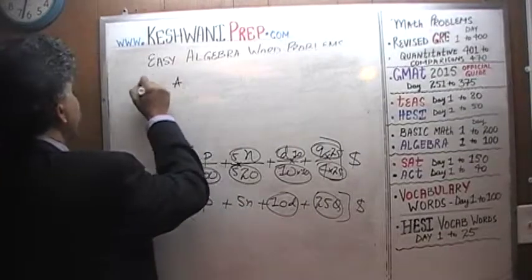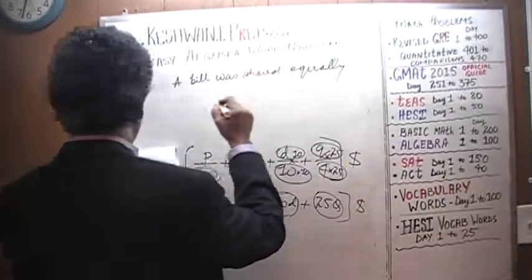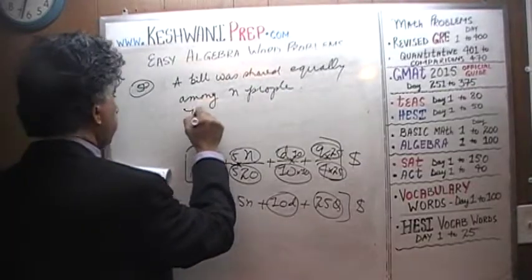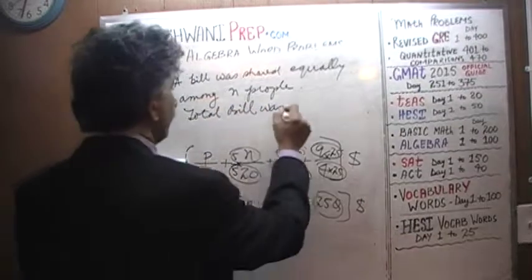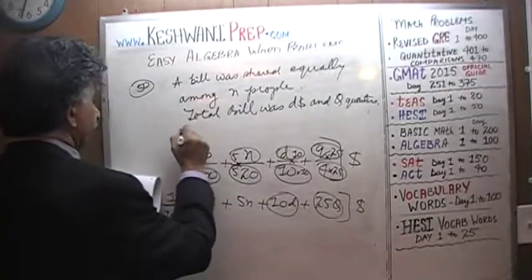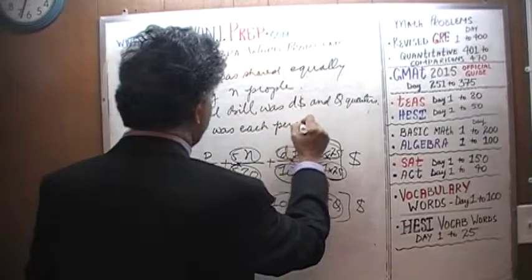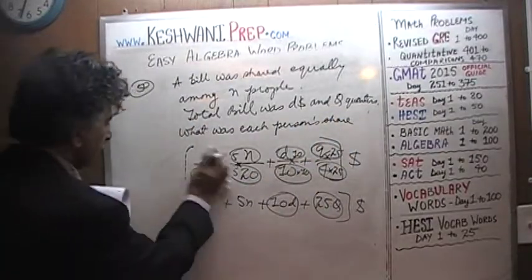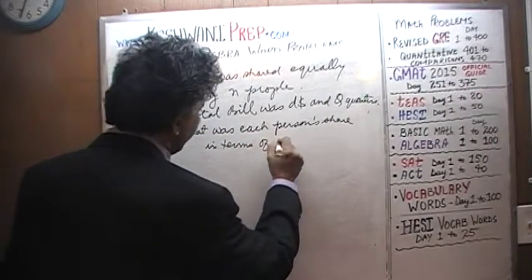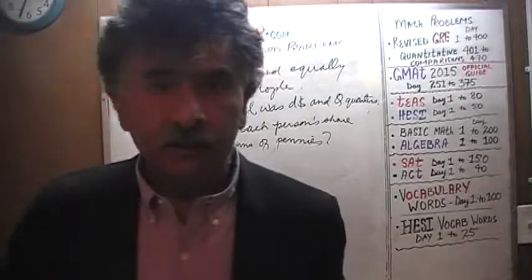This is number 50. A bill was shared equally among n people. Total bill was d dollars and q quarters. What was each person's share in terms of pennies? In other words, how many pennies did each person pay? We have to express our answer not in terms of dollars, not in terms of quarters, but in terms of pennies.